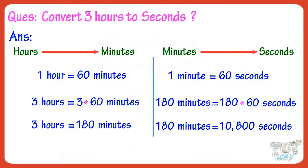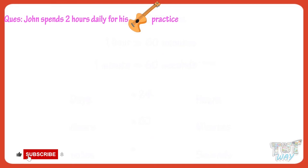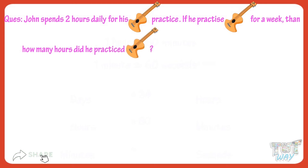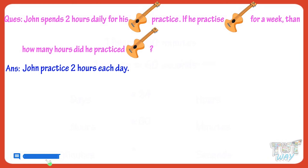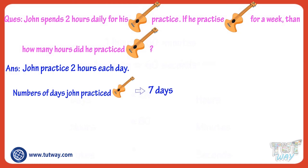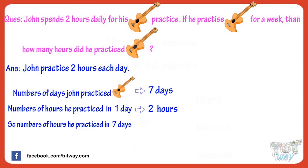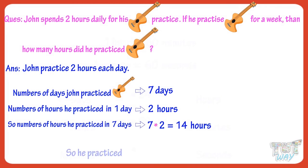Now let's solve another question. John spends 2 hours daily for his guitar practice. If he practiced guitar for a week, then how many hours did he practice? John practiced 2 hours each day. Number of days John practiced guitar is 7 days, as 1 week has 7 days. Number of hours he practiced in 1 day are 2 hours. So number of hours he practiced in 7 days will be 7 multiplied by 2, that is 14 hours. So he practiced guitar for 14 hours in total.